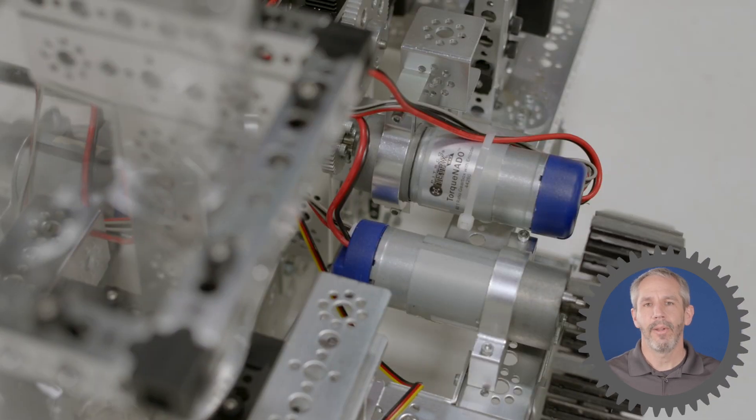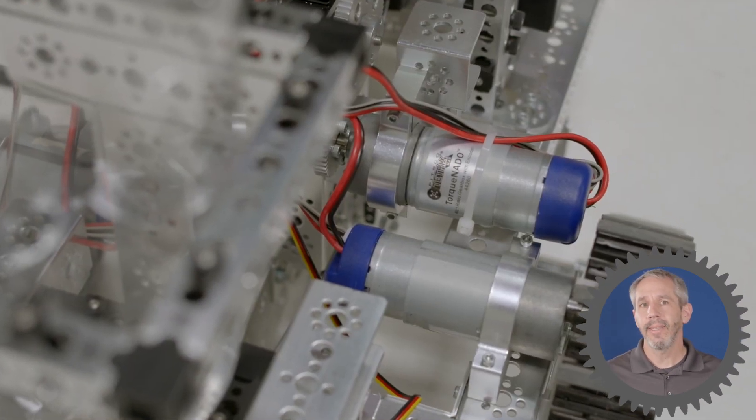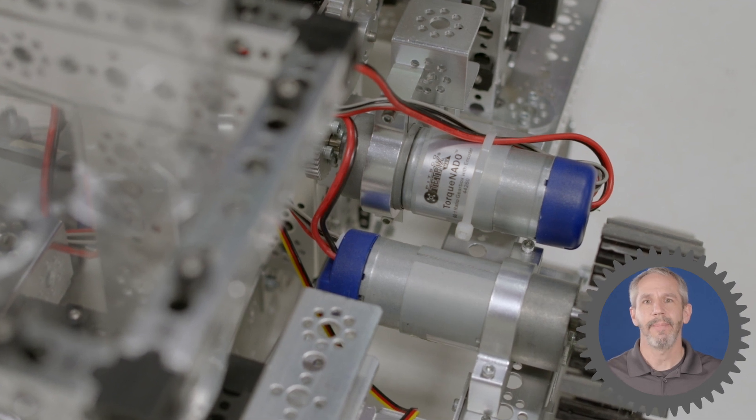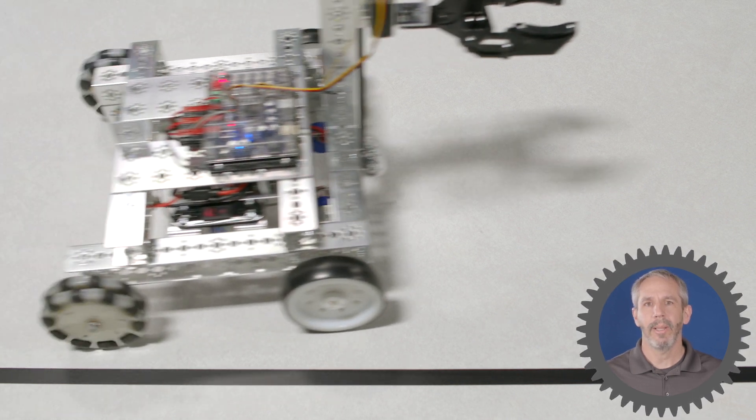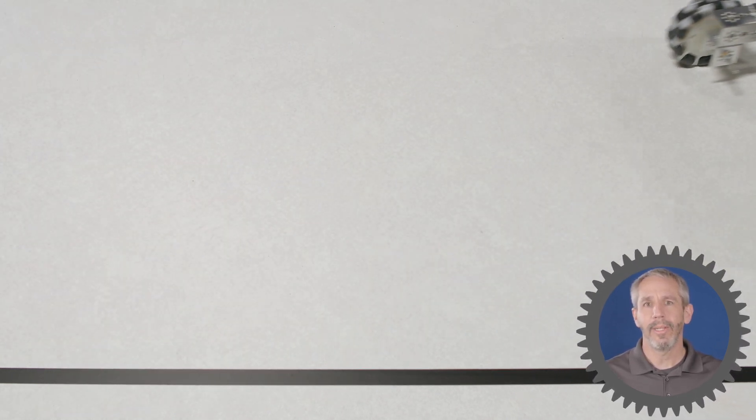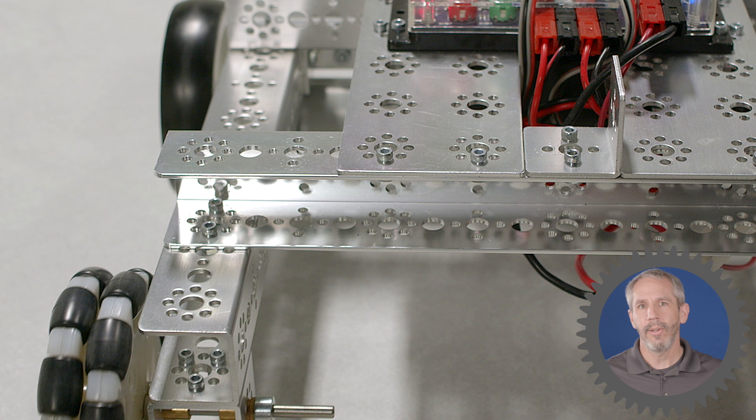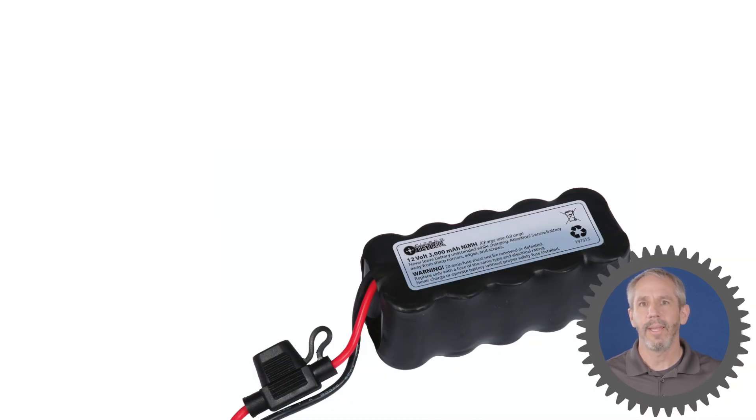Another advantage to using motor encoders is that they give you consistent performance every time. Maybe you've tried to program a robot using motor power to drive in a straight line and you set the motor powers to the same level, but you notice your robot drifting off to one side or to the other.